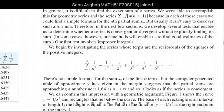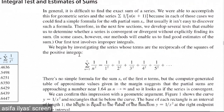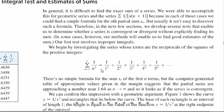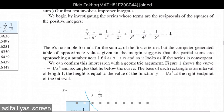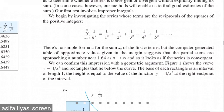We begin by investigating the series whose terms are the reciprocals of the squares of the positive integers: the sum from 1 to infinity of 1 over n squared. There is no simple formula for the sum or for the first n terms. However, computer-generated table values suggest that the partial sums are approaching a number near 1.64 as n approaches infinity.